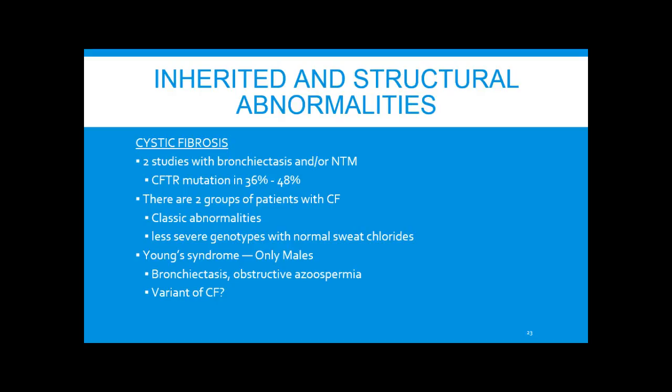Two studies show that in patients with bronchiectasis and/or NTM, the CFTR mutation is present in 36 to 48%. There appear to be two groups with CF: the classic type diagnosed at birth with abnormal sweat chloride or genotyping, and a less severe type with often normal sweat chloride diagnosed later in life. A possible variant of CF is Young's syndrome — diagnosed with bronchiectasis and obstructive azoospermia — making it a male-only condition.